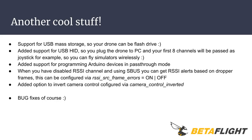Some other cool features are coming. In Betaflight 3.4 you can expect USB mass storage support, so your drone can be attached to a PC as a flash drive. There is also added support for USB HID, so you can plug the drone into a PC and your first 8 channels will be passed as a joystick — allowing you to fly simulators wirelessly. There is added support for programming Arduino devices in pass-through mode. When you have the RSSI channel disabled and are using SBUS, you can get RSSI alerts based on dropped frames, configurable via rssi_src_frame_errors set to on or off. There is also an option to invert camera control, configured via camera_control_inverted.